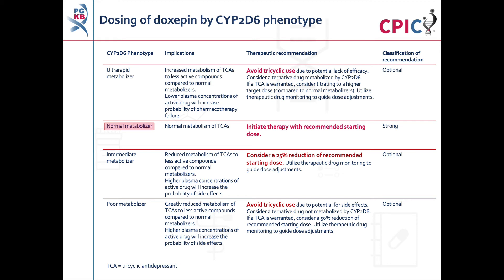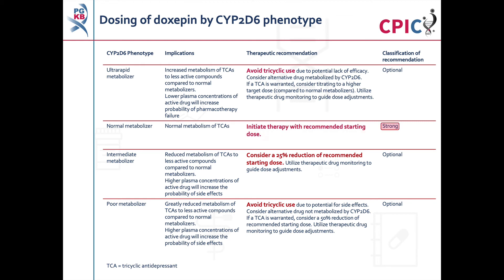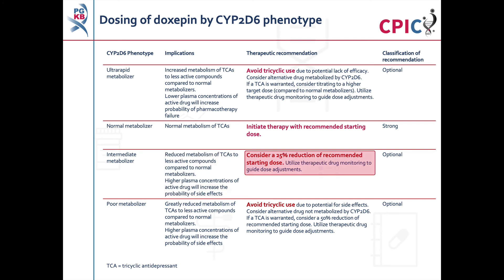Patients with a CYP2D6 normal metabolizer phenotype will have normal metabolism of TCAs and can begin doxepine therapy with the recommended starting dose — this is a strong recommendation. Patients with a CYP2D6 intermediate metabolizer phenotype will have reduced metabolism of TCAs to less active compounds. This is an optional recommendation.